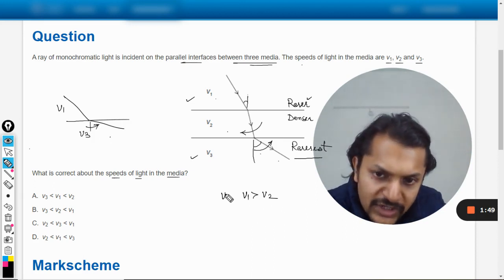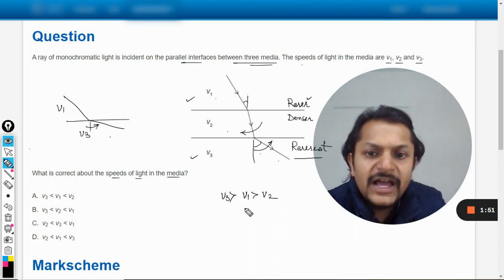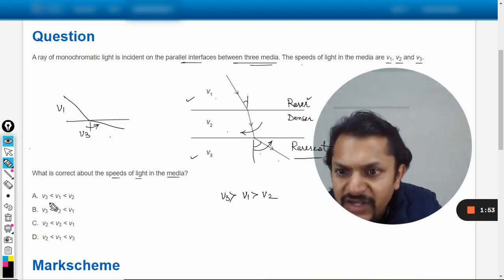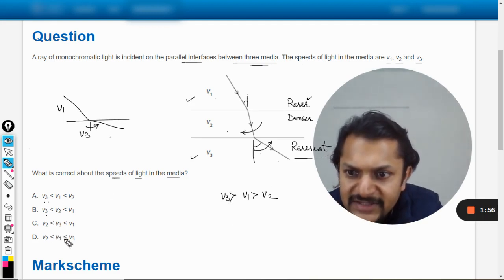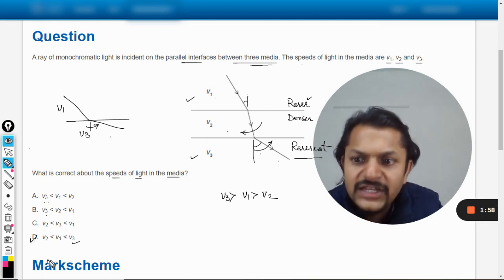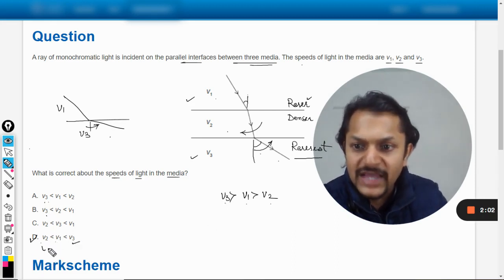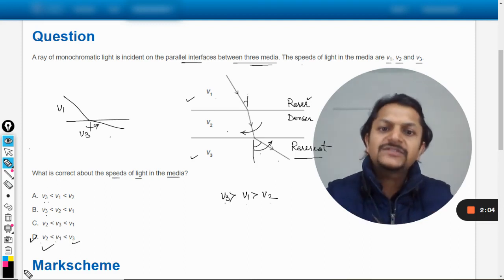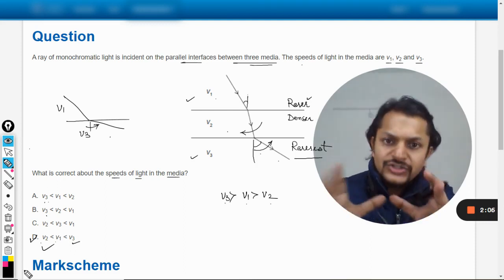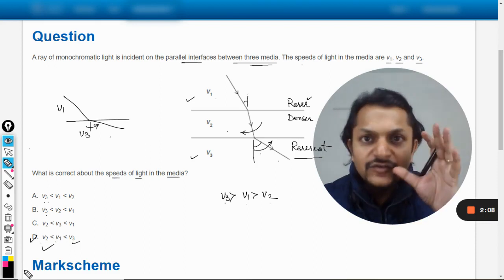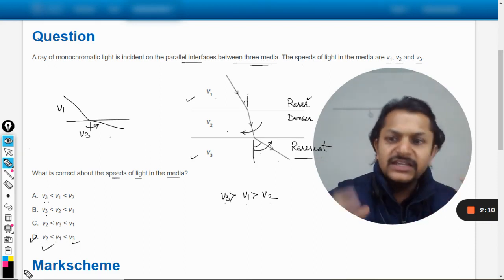So it should be like this. Let us see the options: v3 is less, v3 is less, v3 is greatest - so D should be the correct answer. You see v3, v1, v2 - v3, v1, v2, yes. According to this concept, I would say that the answer will be D.